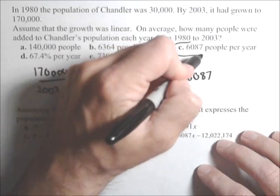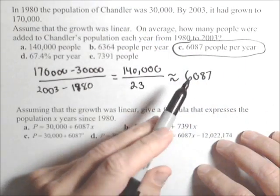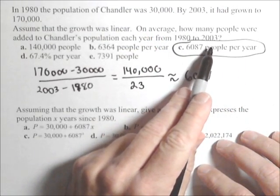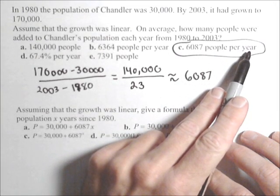It's a rate of change, so it's something changing with respect to something else. In this case, the output, which is people, per unit change in input, which is year.